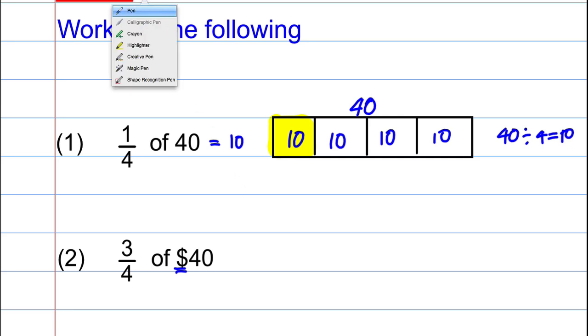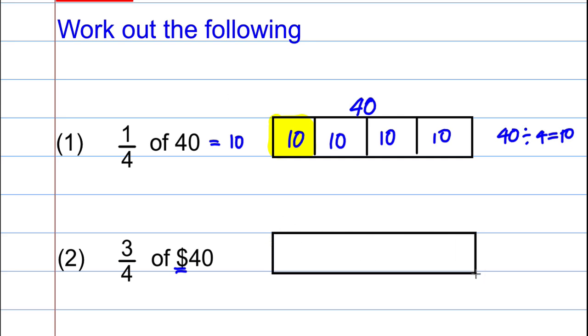So exactly as we did before, what we're going to do, we're going to draw a box out that represents the total amount, which is 40. We're going to split this into quarters, so we're going to halve it, and then we're going to halve it again. So we have quarters. What goes in each box? Well, we had worked that out previously because 40 divided into four boxes would be 10, so 10 goes in each box.